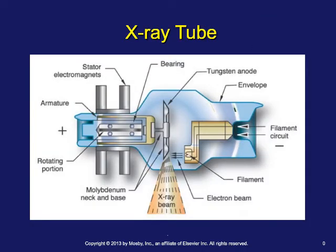Three essential conditions have to be met in order to produce x-rays — this comes from our textbook on page 147, chapter 9. Number one, there must be a free source of electrons. Two, we need a means of accelerating those electrons to speeds approaching the speed of light, and then a means of very quickly decelerating those electrons as well.